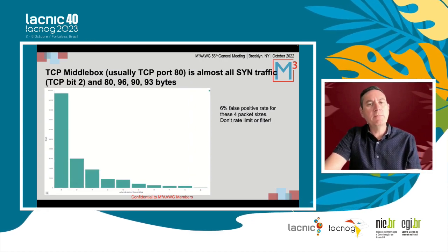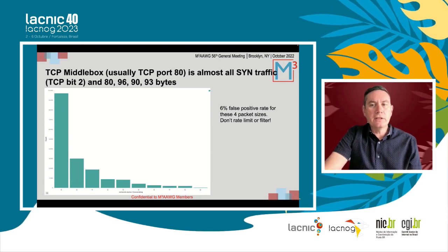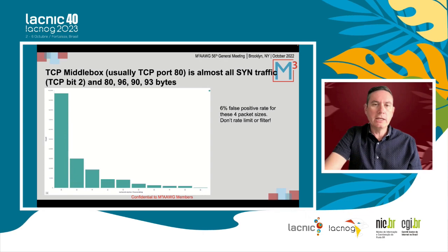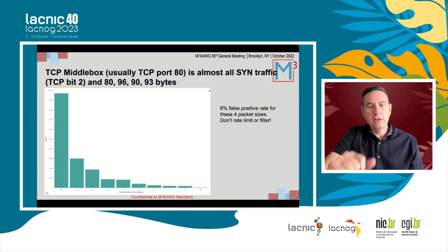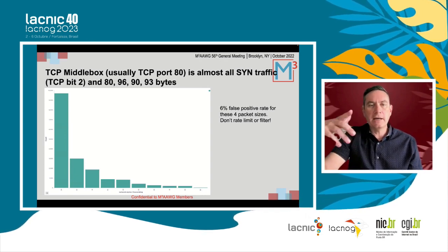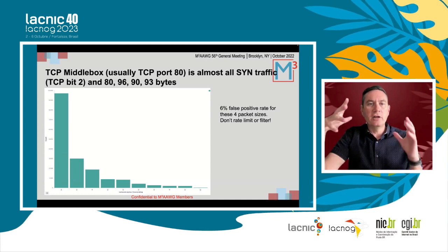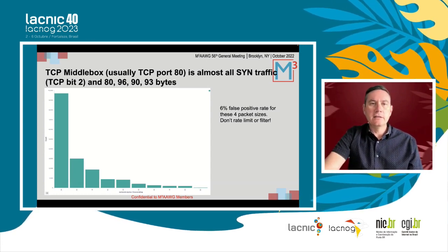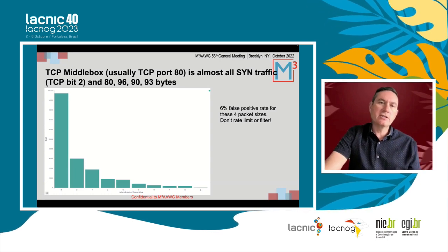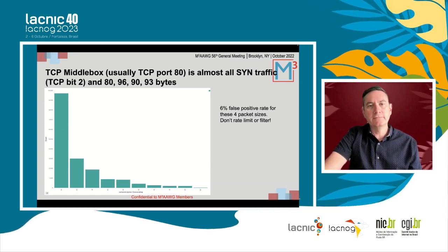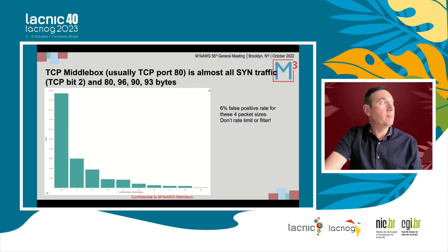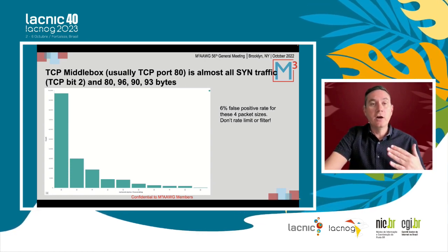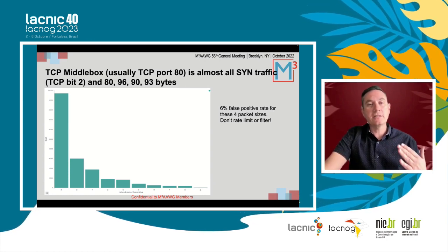The TCP middlebox amplification is harder to filter since it's TCP port 80, but almost all of it is SYN packets with a large size, which is very rare. You probably don't want to filter that traffic, but it may be a good way to identify when these attacks are occurring.